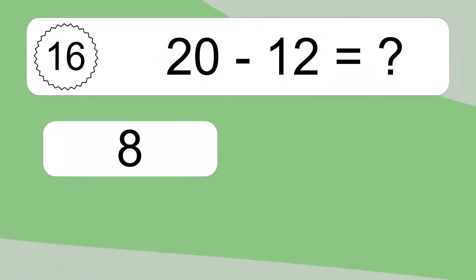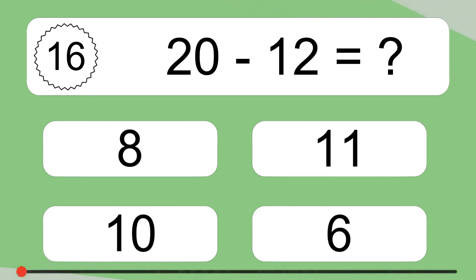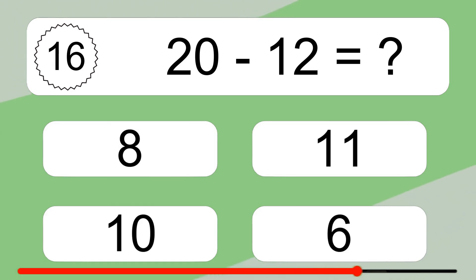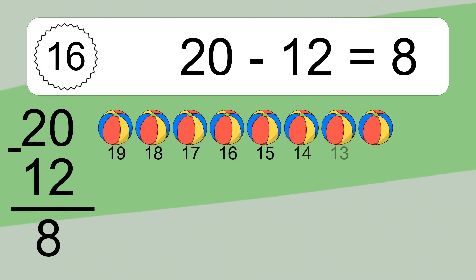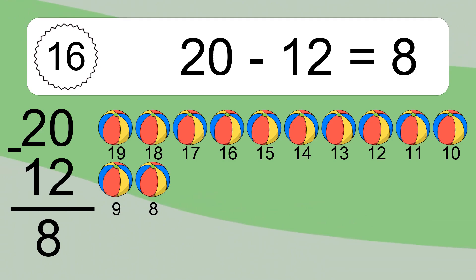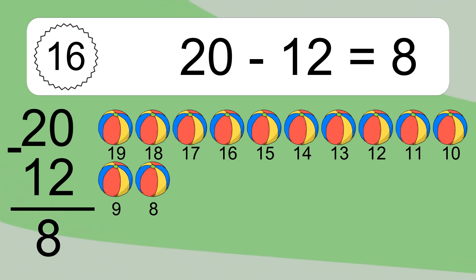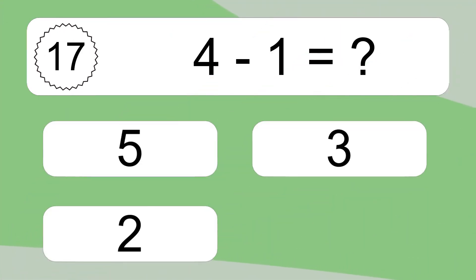20 minus 12 equals what? 20 minus 12 equals 8. Let's count it: 19, 18, 17, 16, 15, 14, 13, 12, 11, 10, 9, 8.